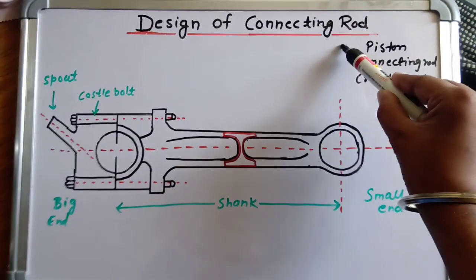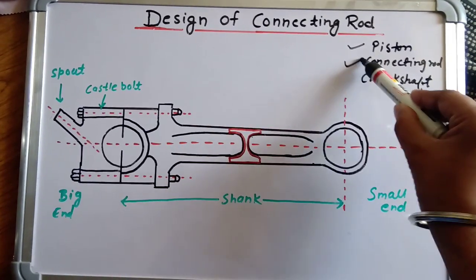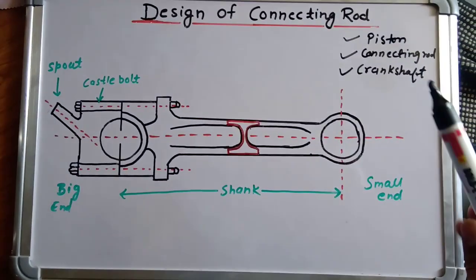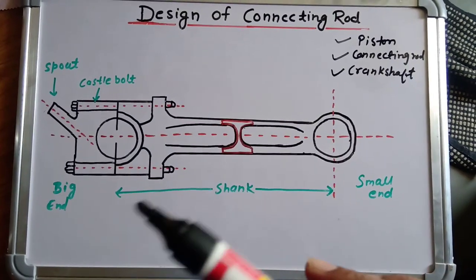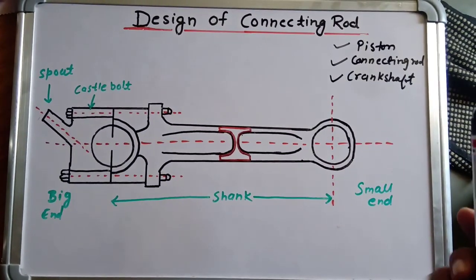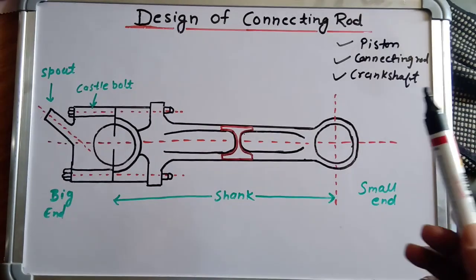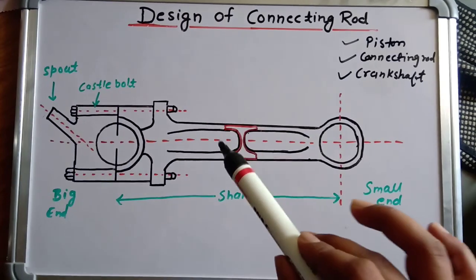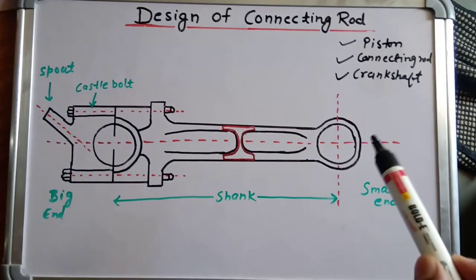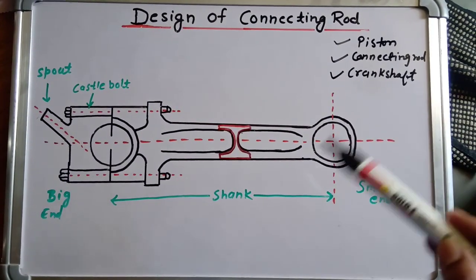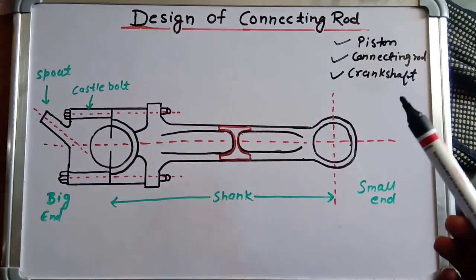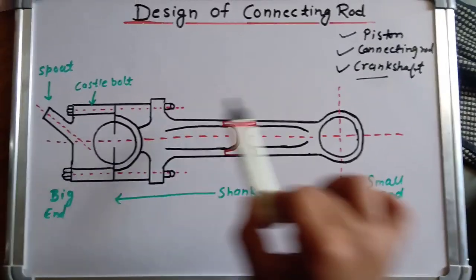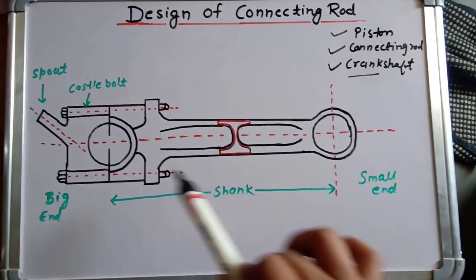The three important parts are: first, the piston; second, the connecting rod; and third, the crankshaft. In the previous video I discussed the design of the piston, and today we are going to discuss the design of the connecting rod. In the next video we will discuss the design of the crankshaft.